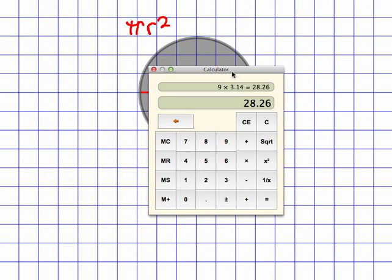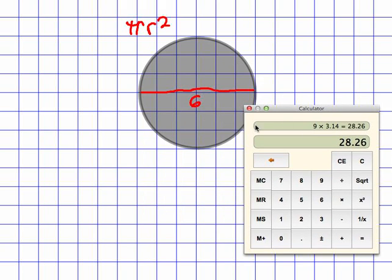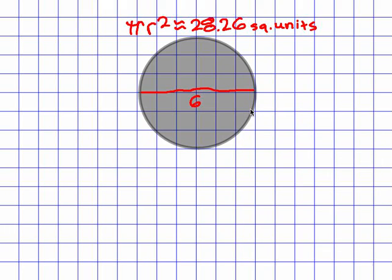As you can see, the radius squared is 9. Multiply that by 3.14, and that equals 28.26. And that would be square units. And you could also go ahead and count the square units within the circle, and you'd see there are roughly 28.